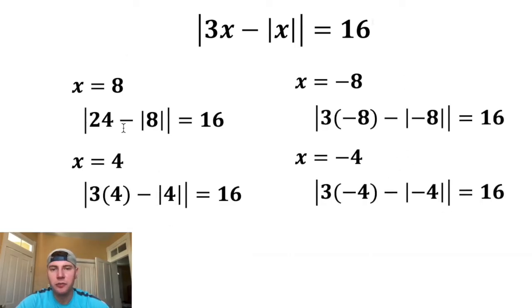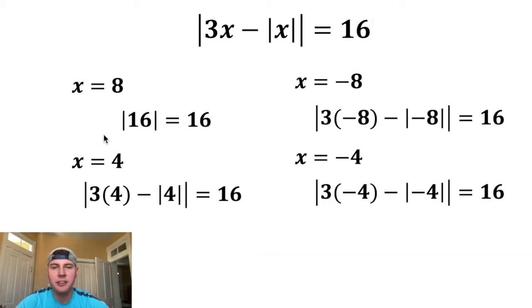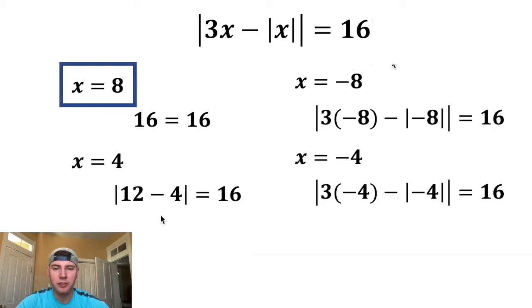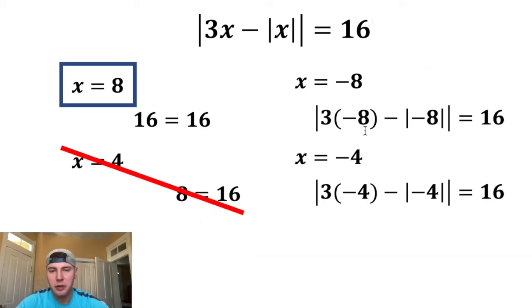For x equals 8: 3 times 8 is 24, absolute value of 8 is 8, and 24 minus 8 is 16. Absolute value of 16 equals 16 — this one works. For x equals 4: 3 times 4 is 12, absolute value of 4 is 4, and 12 minus 4 is 8. Absolute value of 8 is 8, which does not equal 16 — this one is no good.